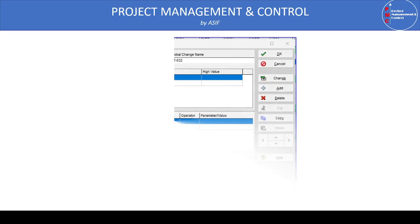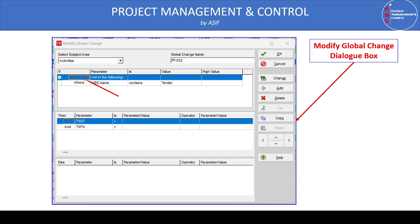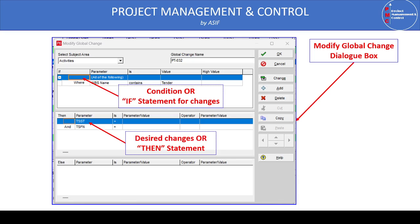Once you click Global Change in the Tools menu, the Modify Global Change dialog box will appear. This dialog contains a 'Select Subject Area' which covers activities, resources, and project expenses, and a Global Change name field where you can assign any name to help you remember why you created this Global Change. The dialog box contains three main areas: the 'If' condition — for example, if the original duration is greater than or equal to 30 days — and the 'Then' statement, such as 'then the activity duration will be 20 days.'